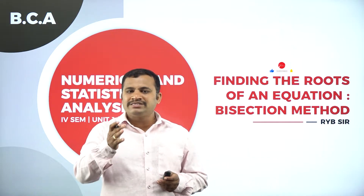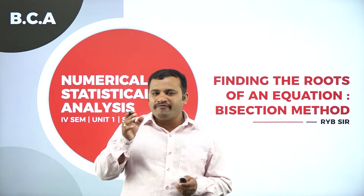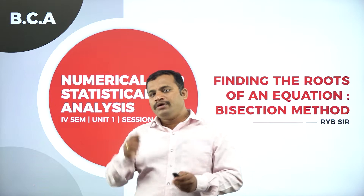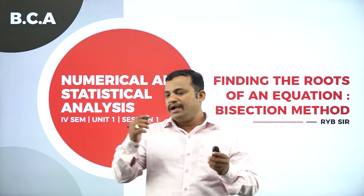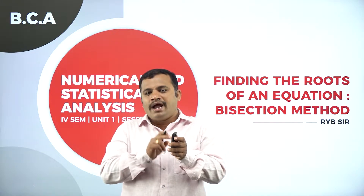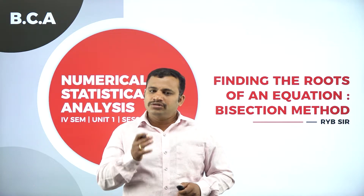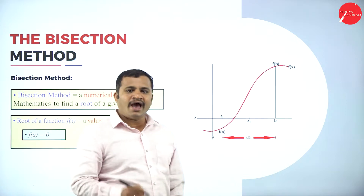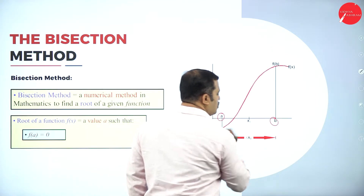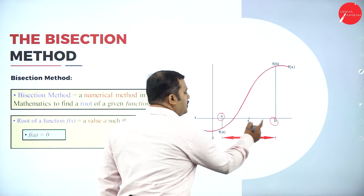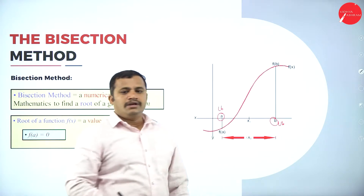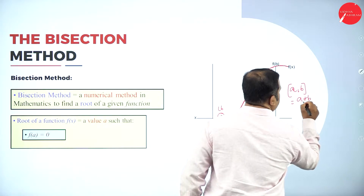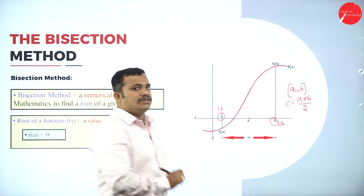The name bisect indicates that the value between two intervals must be obtained by bisecting the two values, that is lower bound and upper bound. Suppose if I have the lower bound as A and upper bound as B, then I have to add up these values and divide by 2 — that is called bisecting. So this bisection method helps us to find out the roots of an equation.